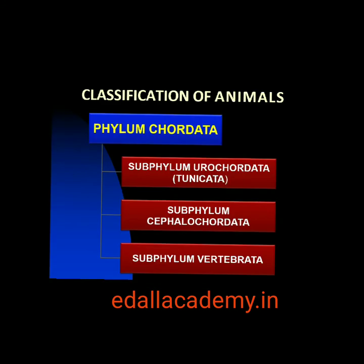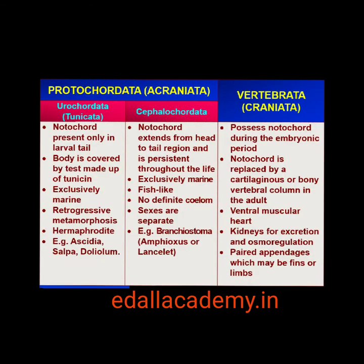Phylum Chordata is divided into three sub-phyla: Urochordata or Tunicata, Cephalochordata, and Vertebrata. Sub-phyla Urochordata and Cephalochordata are often referred to as protochordates and are exclusively marine. In Urochordata, notocord is present only in the larval tail, while in Cephalochordata it extends from head to tail region and is persistent throughout their life.